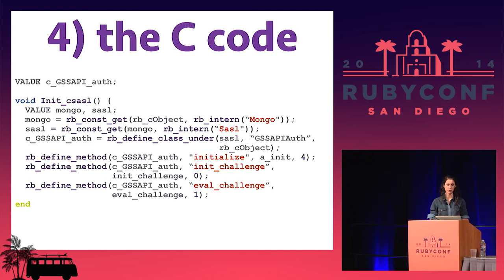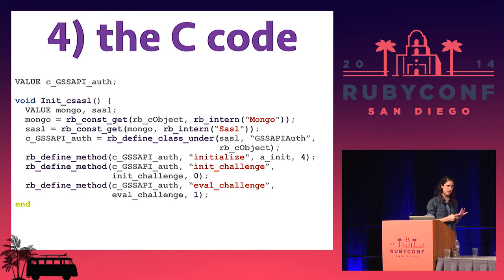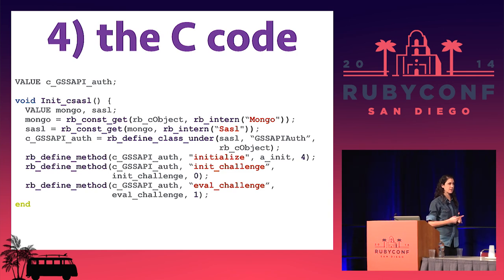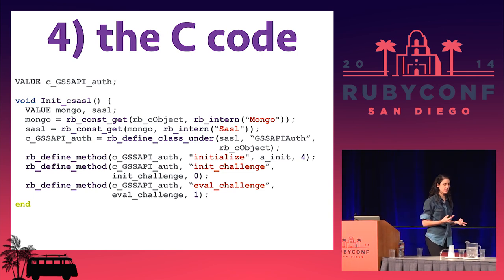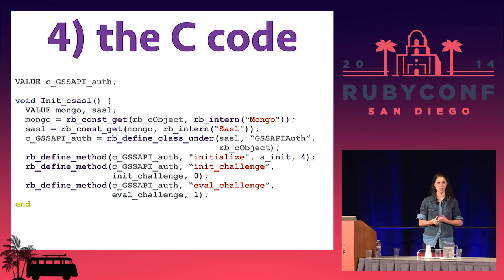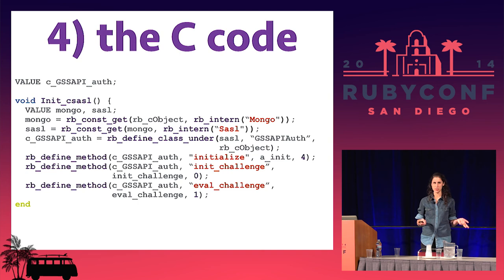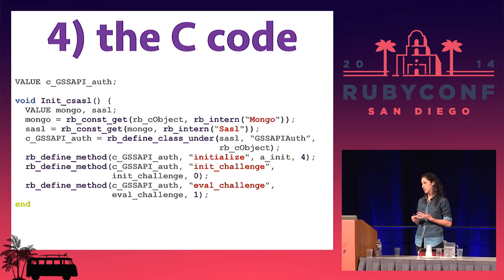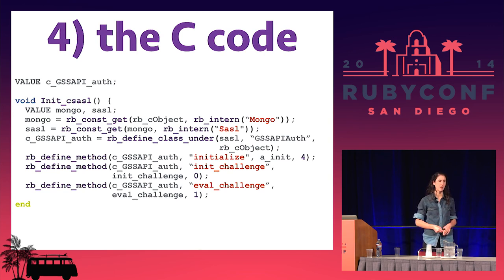So the four things you need when packaging a C extension with your gem: the extconf.rb file that creates the Makefile, a rake-compiler task so you can test your gem, the C code itself, and your gemspec which tells RubyGems that you have an extension that needs to be installed when you install the gem.